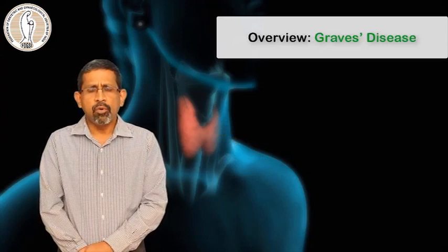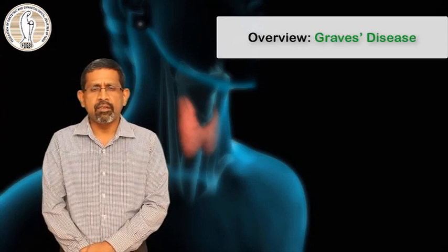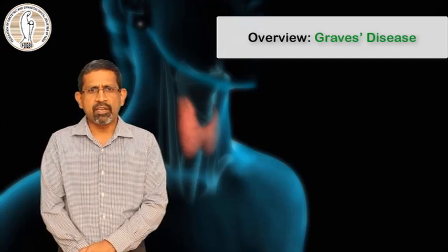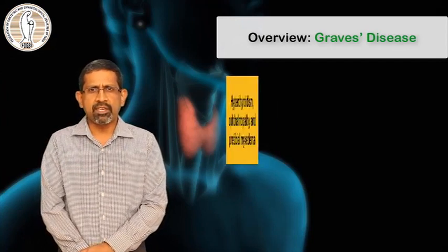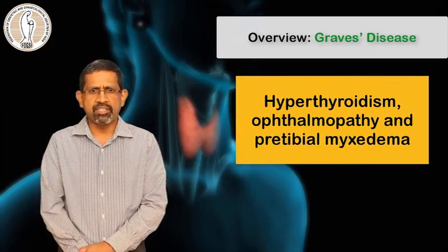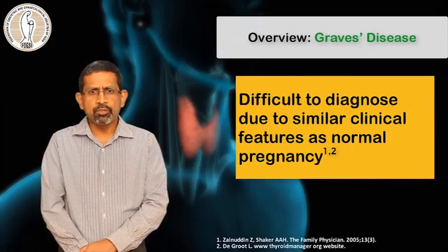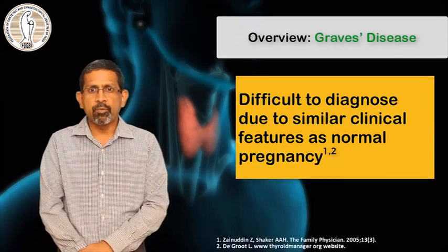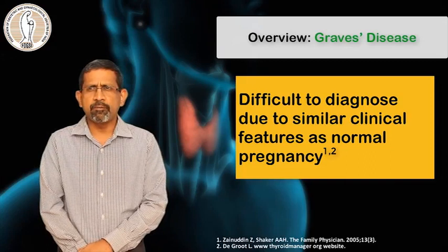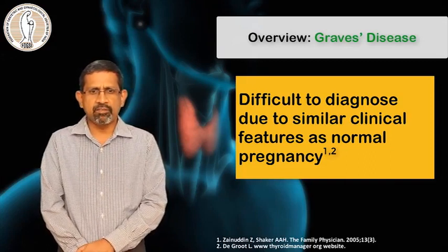The overview of Graves disease, which is the commonest cause in pregnancy: very rarely we may see patients having both hyperthyroidism, ophthalmopathy, and pre-tibial myxedema. It is very difficult to differentiate Graves disease if the above features are not present, because it is difficult to distinguish from normal pregnancy manifestations.